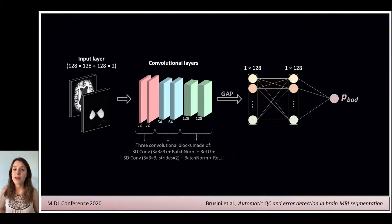Once the error maps were created, we trained a convolutional neural network to perform binary classification in order to predict whether a segmentation is bad or not.